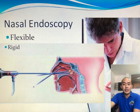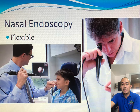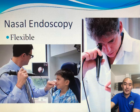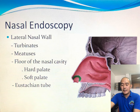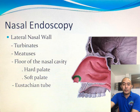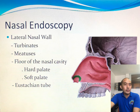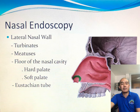In nasal endoscopy, we shall see several structures. We have the turbinates, more often mistaken as nasal masses by young mothers. Of course, there are gaps between the nose and the floor of the nasal cavity — that is the most consistent landmark, even more consistent than the nasal septum, because septums are sometimes deviated or perforated.